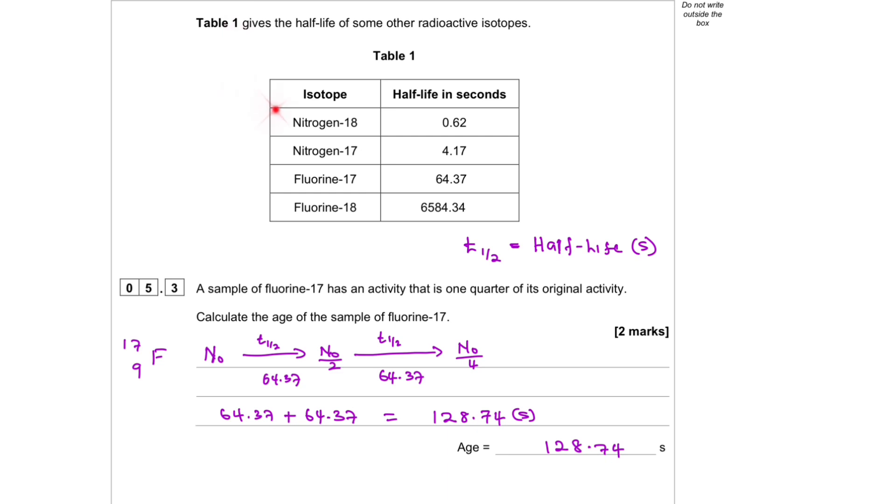Table 1 gives the half-life of some other radioactive isotopes. T to the power of a half is half-life in seconds. 5.3. A sample of fluorine-17 has an activity that is one-quarter of its original activity. Calculate the age of the sample of fluorine-17.